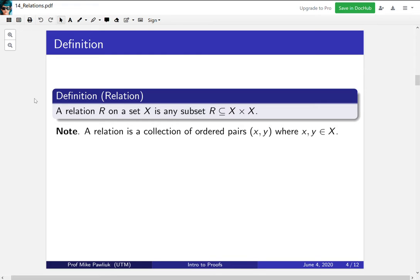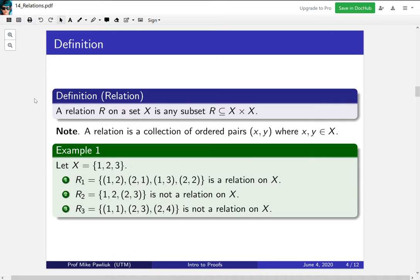Let's look at some examples to help understand this. For all these examples, we'll take X equals the set {1, 2, 3}. In the first example, we have the collection of pairs {(1,2), (2,1), (1,3), (2,2)}. This is a relation on X. It is some amount of pairs, and both the first coordinates and the second coordinates are taken from 1, 2, 3.